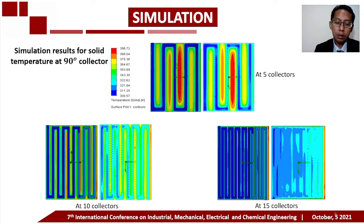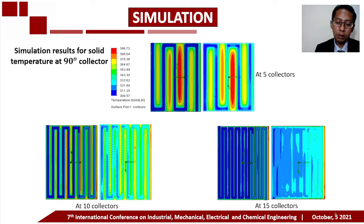Simulations are carried out using SolidWorks 2017 Flow Simulation. The simulation of the heat test at the 90-degree collector angle is performed through three variations of the number of collectors. The collector with 15 collectors has the smallest average solid temperature value of 329.5 K, and the largest average solid temperature belongs to the configuration with 5 collectors at 309.6 K.